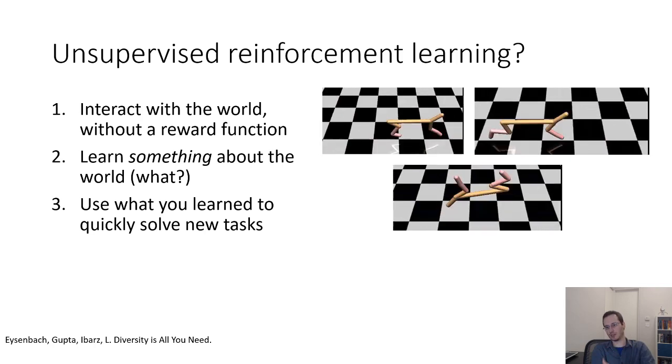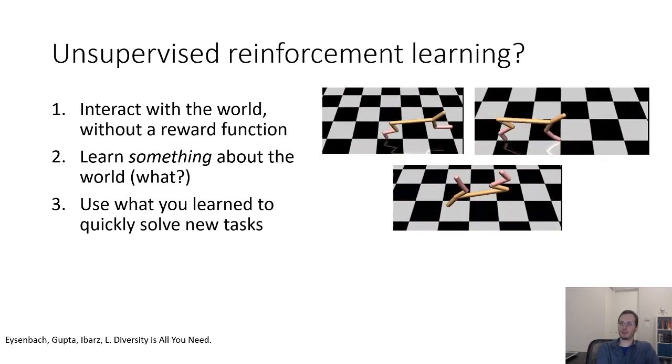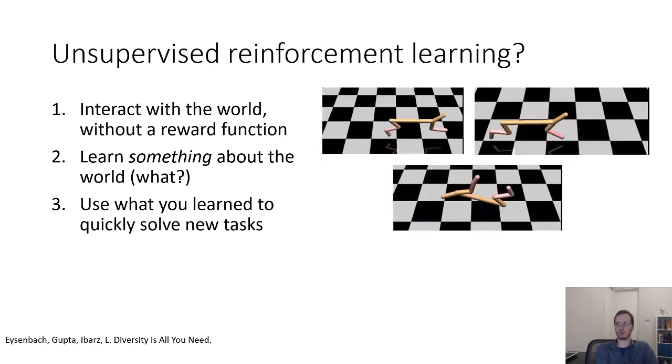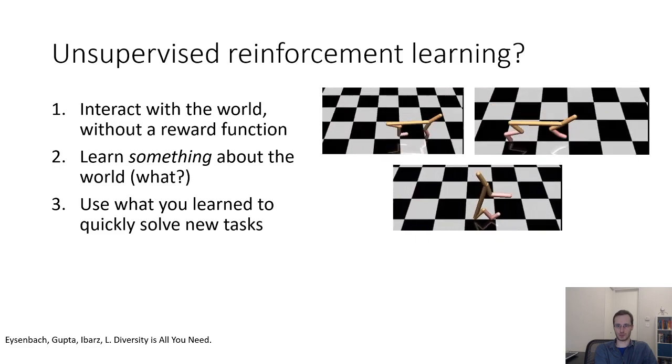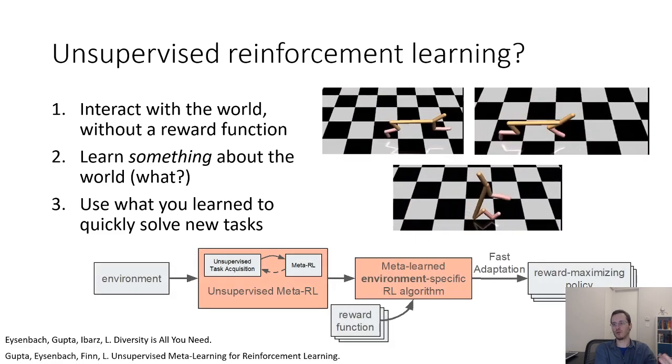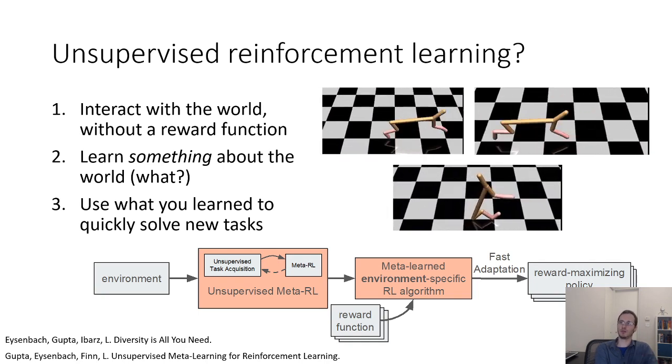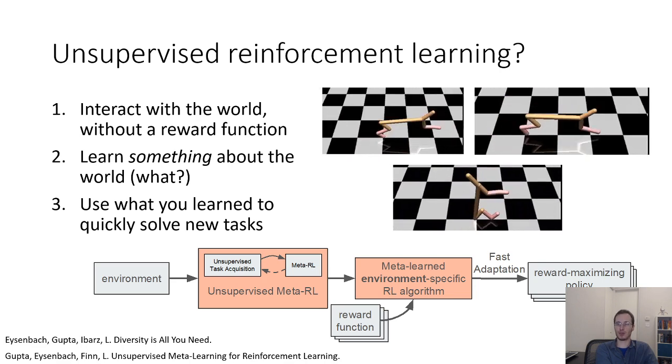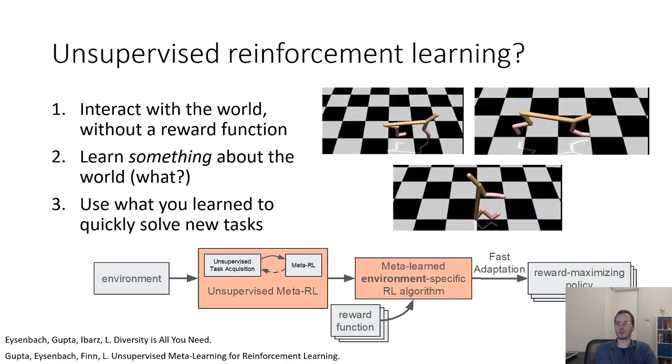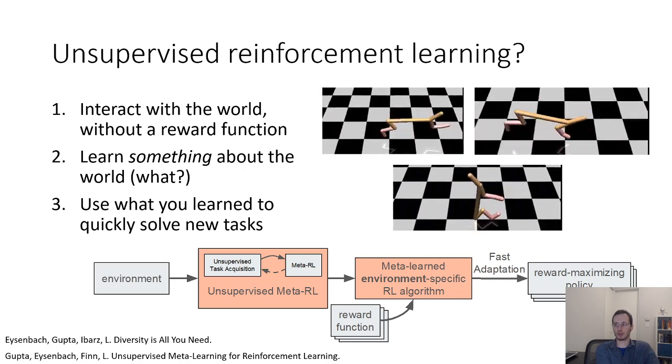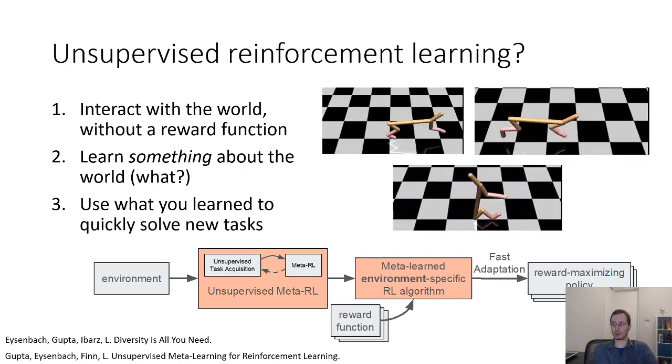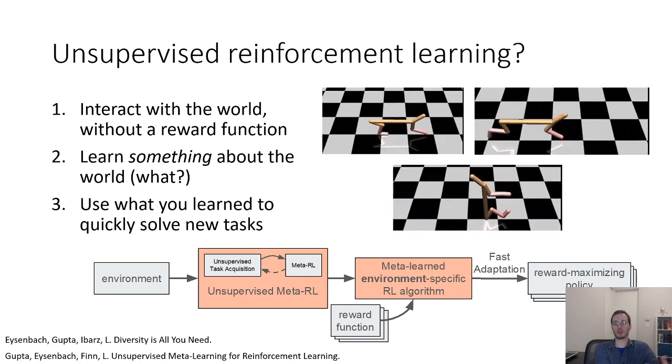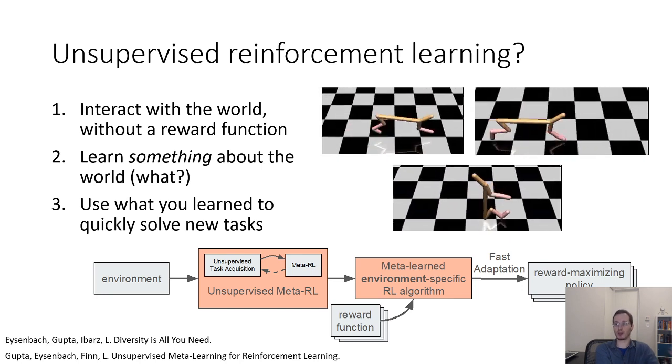As an example, just to get you thinking a little bit, these are some videos that I showed in the information theoretic exploration lecture, where I talked about these information theoretic objectives for unsupervised acquisition of skills. We can actually combine these skills with a meta-learning framework, where we can take the individual skills acquired through unsupervised exploration, and then build a meta-learning algorithm, which adapts quickly to each one of these skills. And the resulting meta-learning algorithm can then learn how to learn new skills more quickly, so that when it is given a reward function by a human, maybe it can acquire the skill corresponding to that human provided reward function much more efficiently.